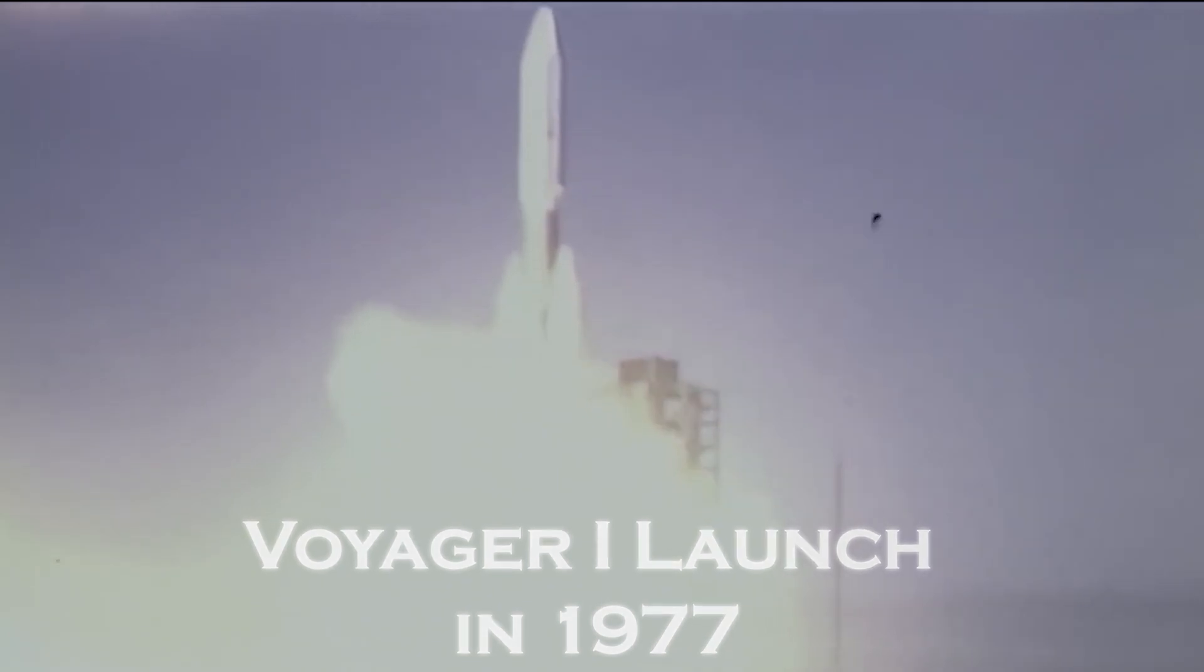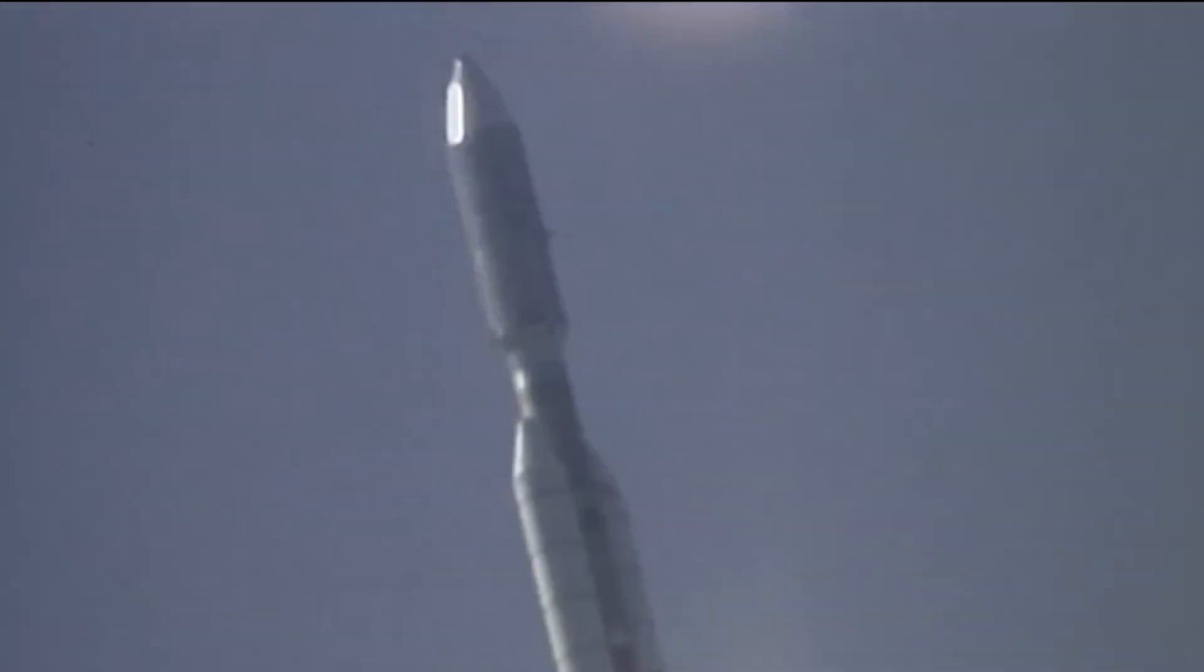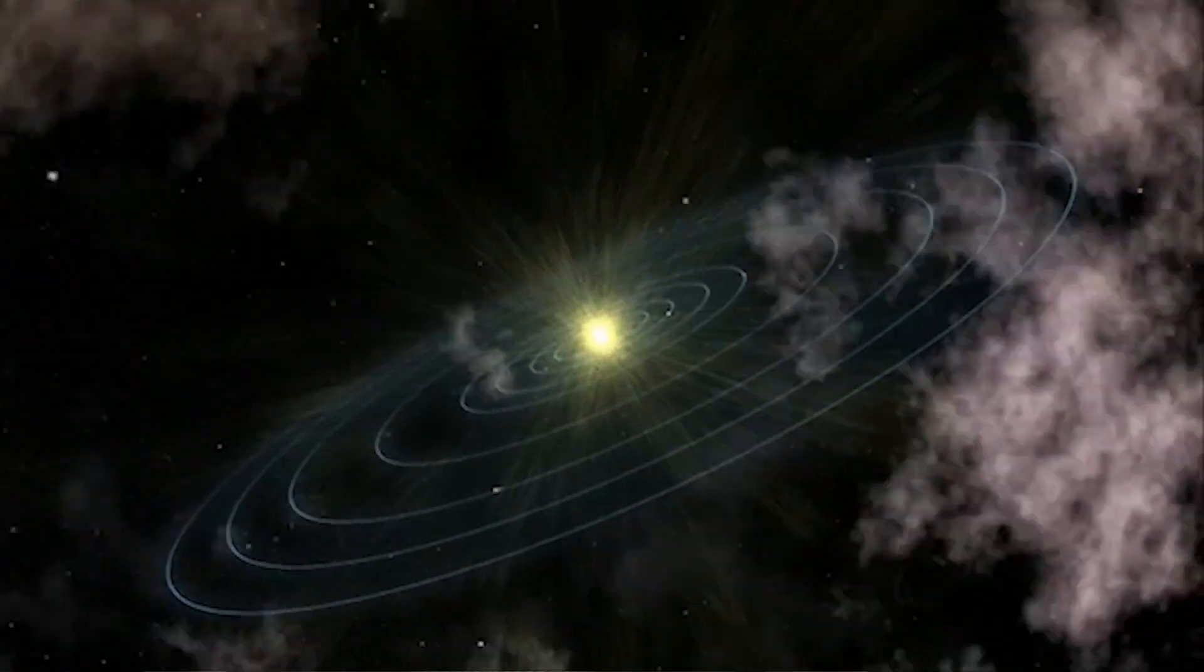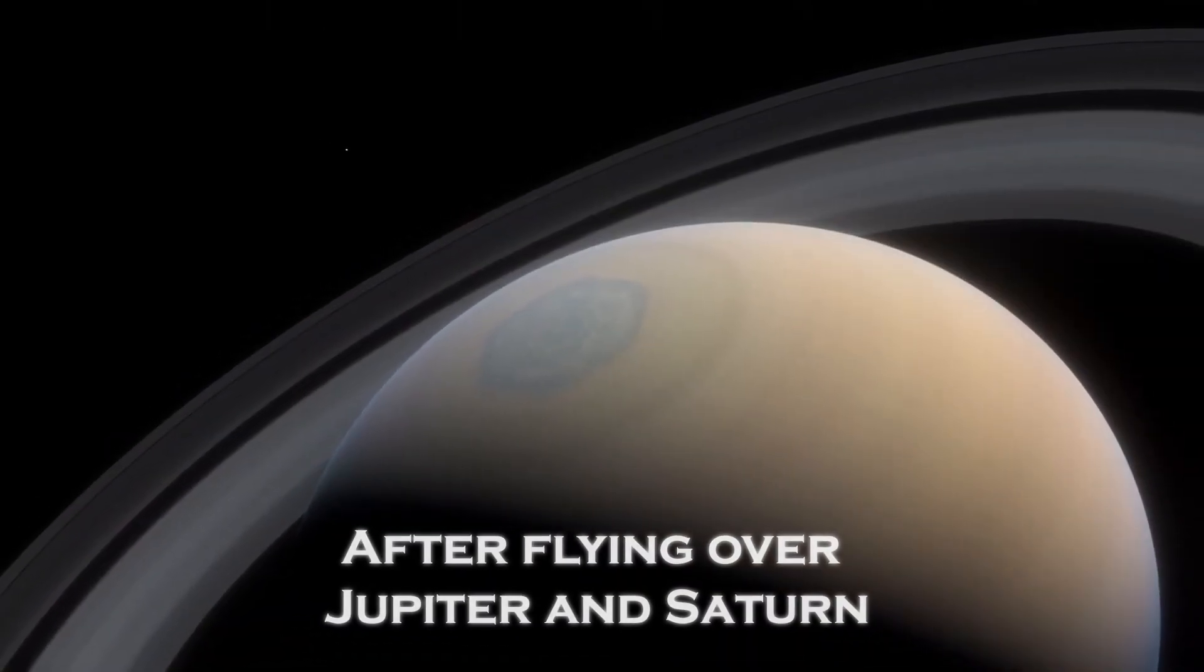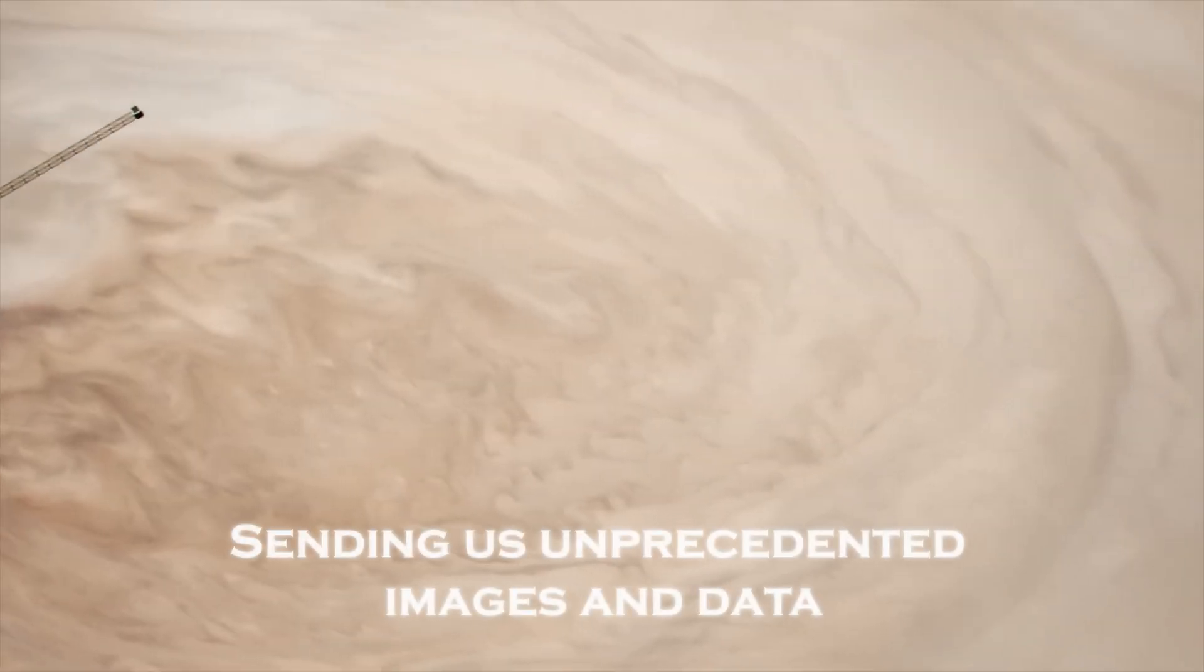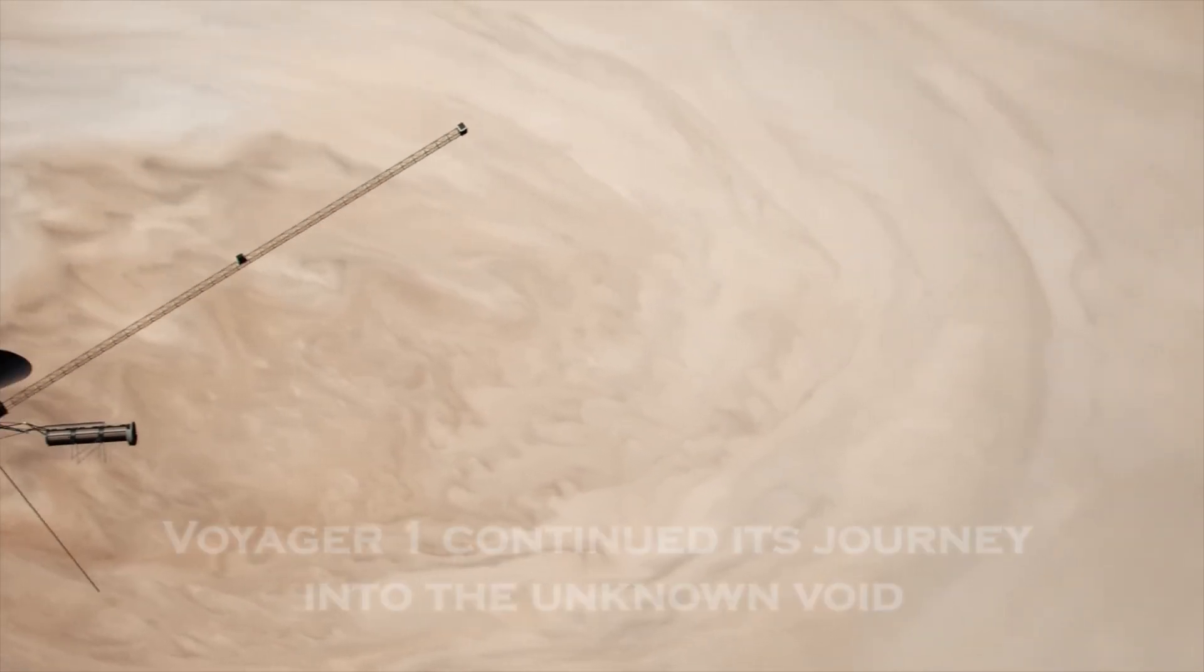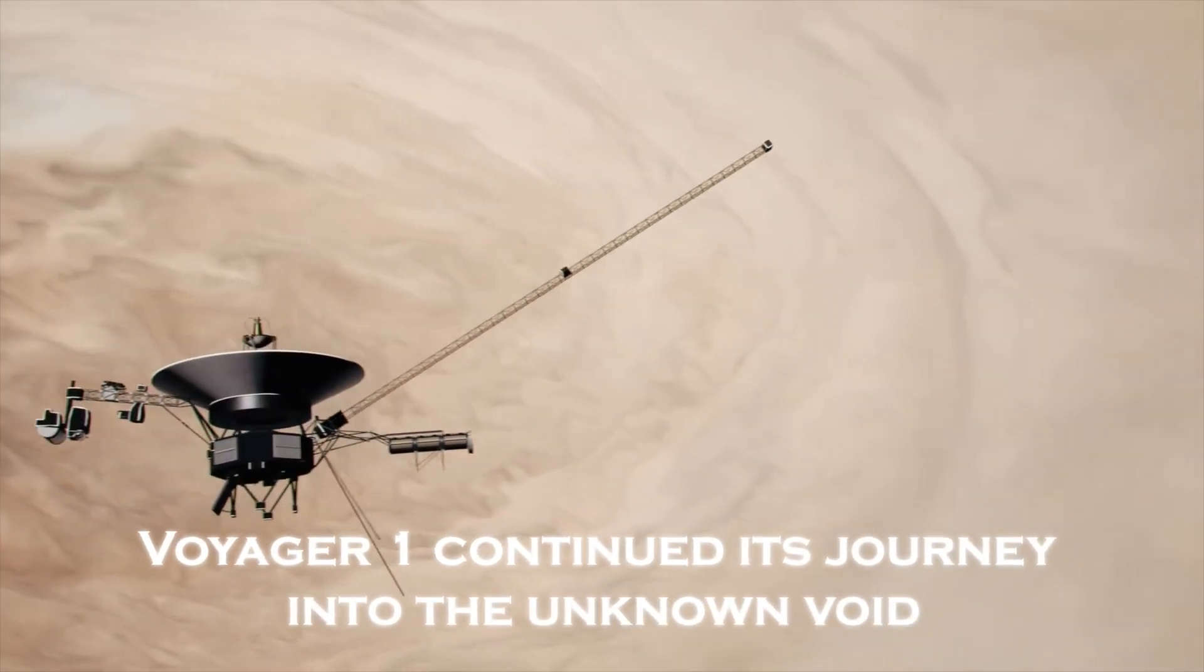Launched in 1977, Voyager 1 had a clear mission: to explore the outermost planets of our solar system, collect data, and one day perhaps cross that invisible boundary that separates our solar system from interstellar space. After a flyby over Jupiter and Saturn, sending us unprecedented images and data, Voyager 1 continued its journey into the unknown void.